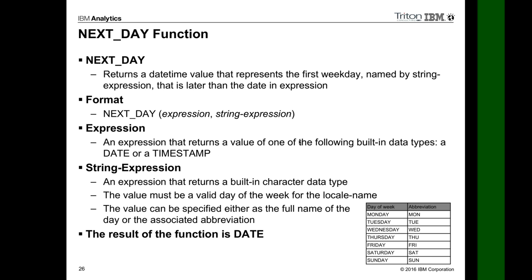NEXT_DAY is neat — based on the character string you use, it figures out what day you mean. You say: NEXT_DAY(today's_date, 'Monday') and it gives back the timestamp for the next Monday after today. It also works in national language — in France or Germany you can pass the day name in the local language, and it handles it.